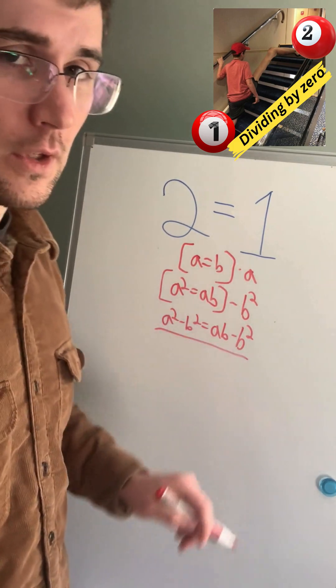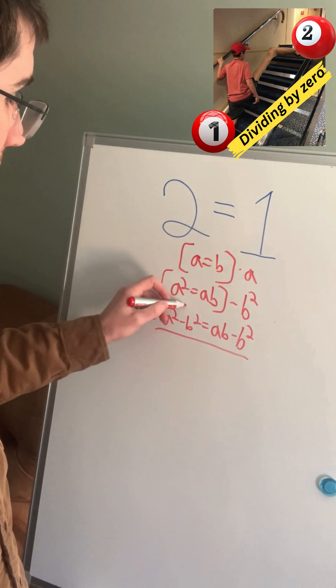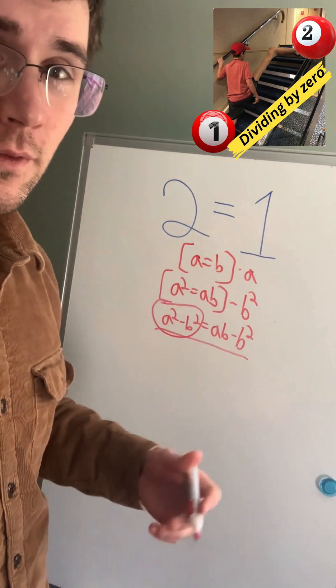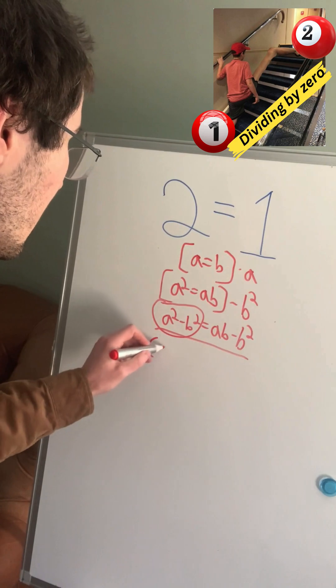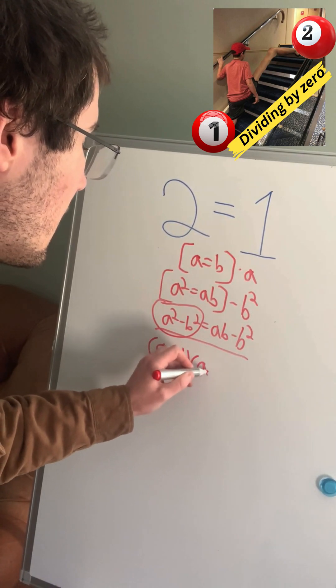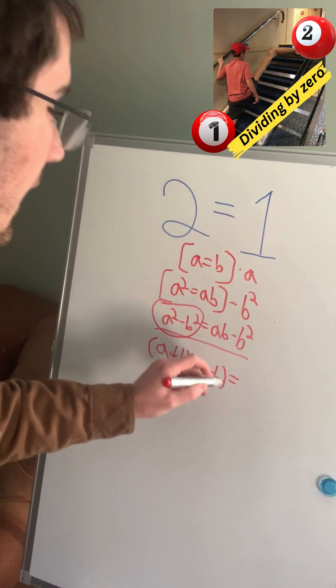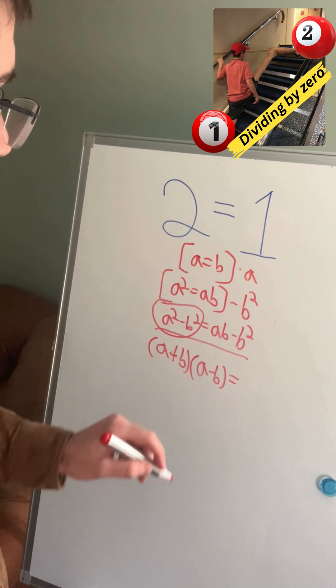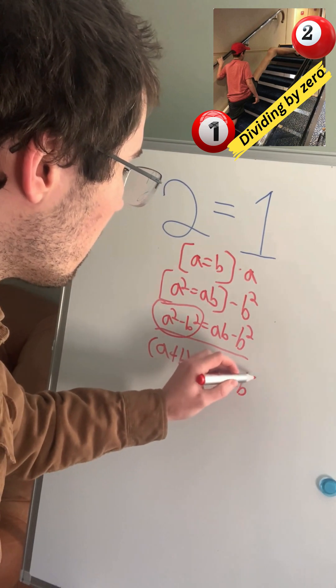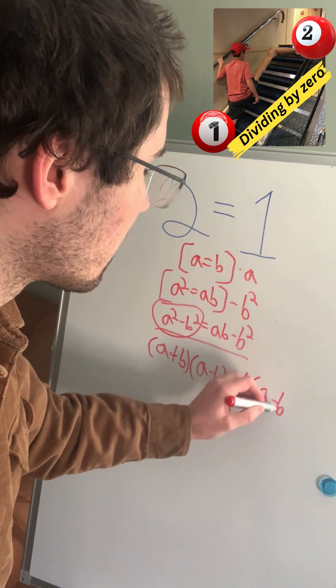Now, if we want to factor both sides of our equation, on the left-hand side, we have what's called a difference of squares. And so we can have this as A plus B times A minus B. And on our right-hand side, we have a B term common, so we'll take that out as B times A minus B.